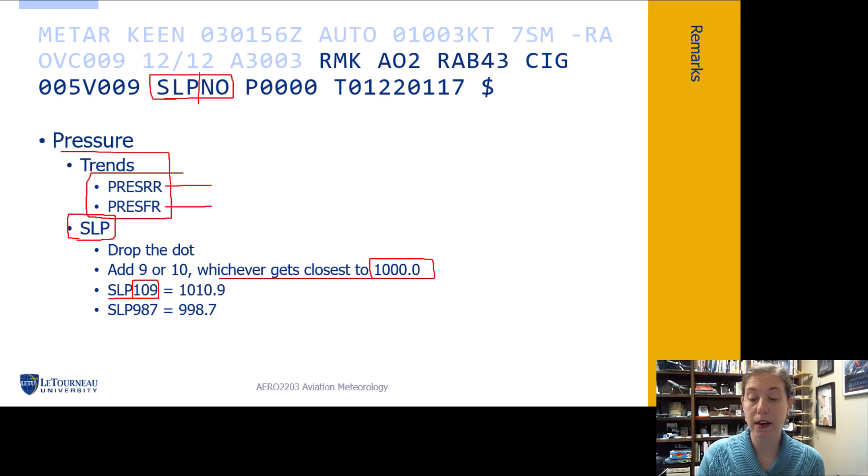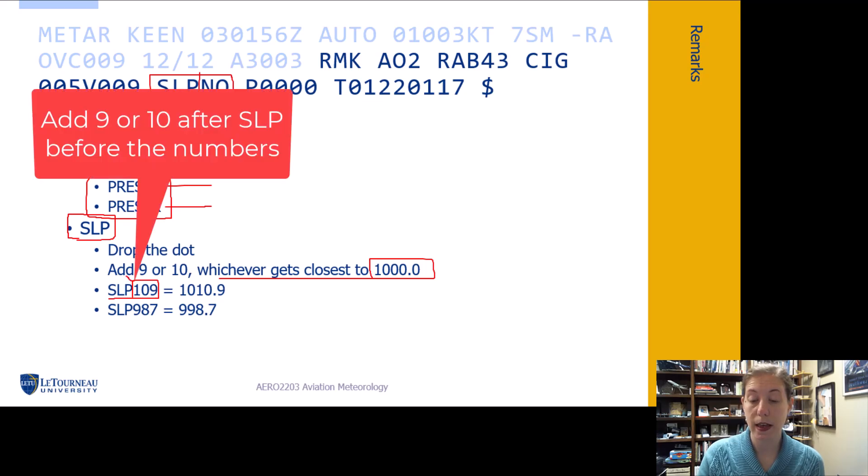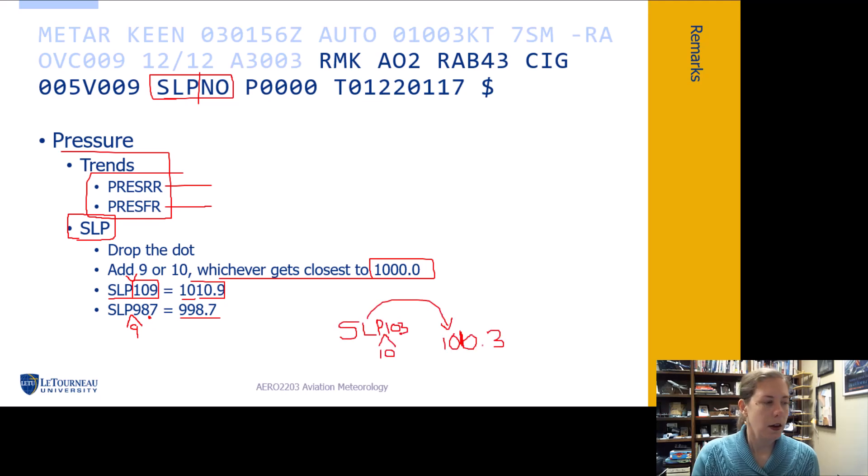So I'm going to add a 10 in front. So I put a 10 right here and we get 1010.9. Add that nine back in. Similarly, here we have 987. So right in here to get close to 1000 millibars, I'm going to insert a nine right here, which produces, and we add the dot back in right there that produces 998.7.